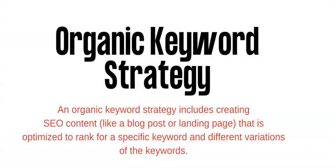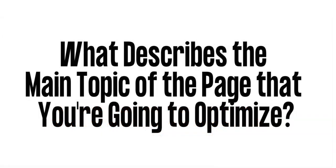What you need to remember is Google is looking for a more organic strategy. That's where keyword variations come into play. So when you start optimizing your website, ask yourself what describes the main topic of the page you're about to optimize. I'm going to show you what different variations of the primary keyword may look like, and I'm going to use my website Gaming Girlfriends as an example.